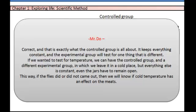Correct. And that's exactly what the control group is all about. It keeps everything constant and the experimental group would test for one thing that is different. If we wanted to test for temperature, we could have the control group and a different experimental group in which we leave it in a cold place. But everything else is constant. Even the jars have to remain open. This way, if the flies did or did not come out, then we would know if cold temperature has an effect on the meat.